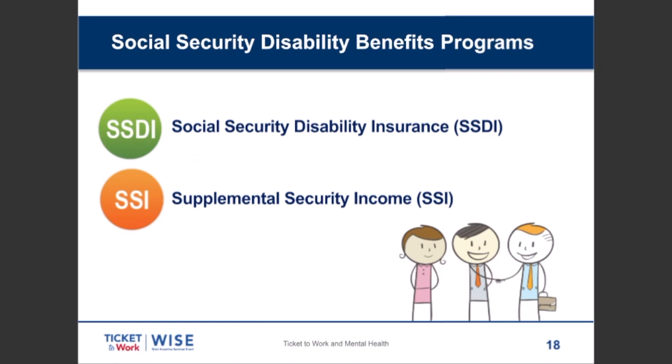The other program is SSI, Supplemental Security Income — notice there's no insurance there. This is basically a federal welfare program paid to the aged, blind, and disabled. The amounts are fairly similar because there's a federal benefits rate. SSI does not require work activity at all. People who have worked and may have a low SSDI benefit could potentially get an SSI supplement. People who have not worked at all could get a full SSI payment. These are two very, very different programs.